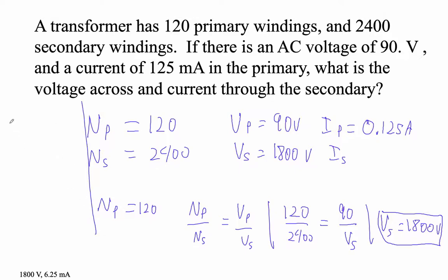And then if we're going to figure out the current, remember, current's inversely proportional. So NP over NS equals IS over IP. So this is one way to do it. So 120 over 2400 is equal to the current in the secondary. And then the current is 0.125. So 0.125 times 120 divided by 2400 is, I secondary is 0.00625 amps, or 6.25 milliamps.